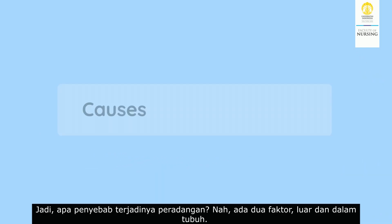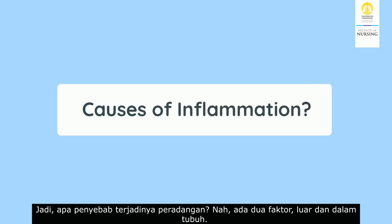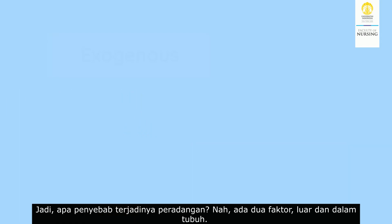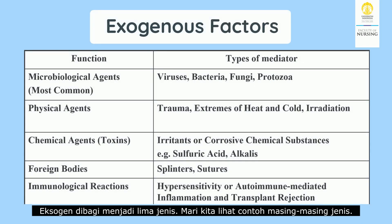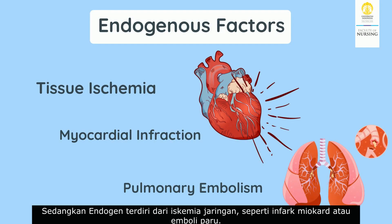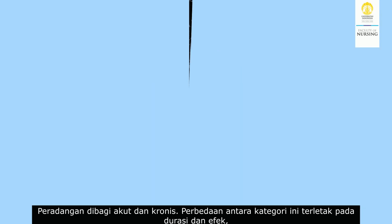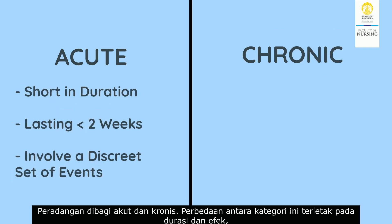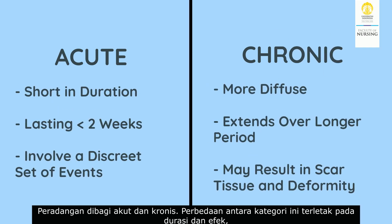So what causes inflammation? There are two factors: outside and inside the body. Exogenous factors are divided into five types, each with different examples. Meanwhile, endogenous factors include tissue ischemia, such as myocardial infarction or pulmonary embolism. Inflammation is also divided into acute and chronic types, with the difference lying in duration and severity — chronic inflammation is longer and more severe, with scar formation and deformity.